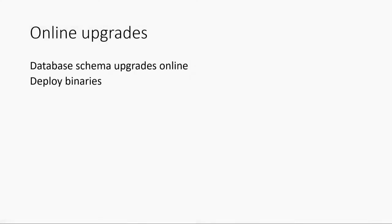So how does this actually work? We need to be able to do these schema upgrades online. The first phase is we deploy the binaries. The binaries in a given sprint deployment — let's say we're currently deploying sprint 123 — understand sprint 123 database schema and sprint 122 schema: N and N minus one. The binaries query SQL to find out what schema they're talking to, and load the matching binder — going back to the factory class.